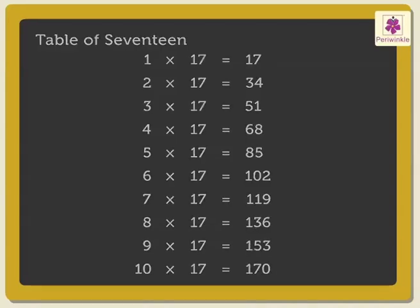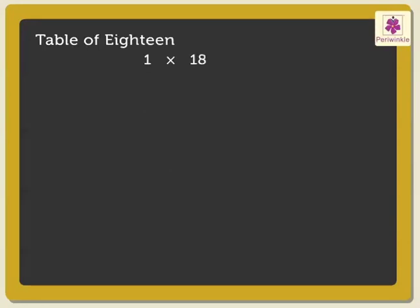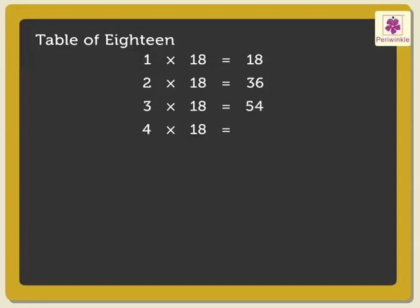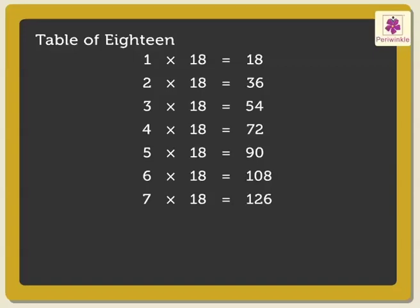The table of 18: 1×18 is 18, 2×18s are 36, 3×18s are 54, 4×18s are 72, 5×18s are 90, 6×18s are 108, 7×18s are 126, 8×18s are 144, 9×18s are 162, 10×18s are 180.